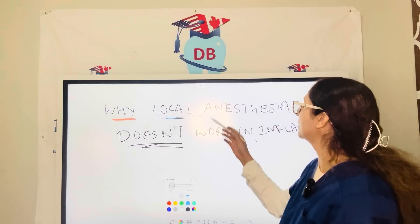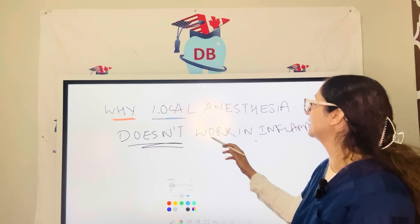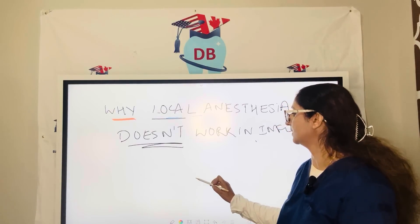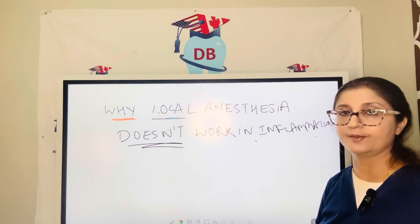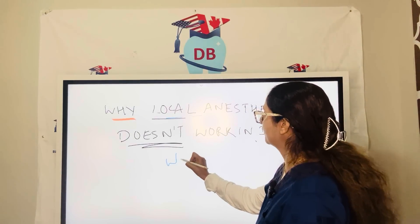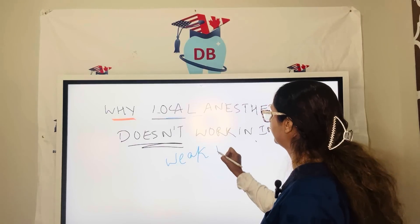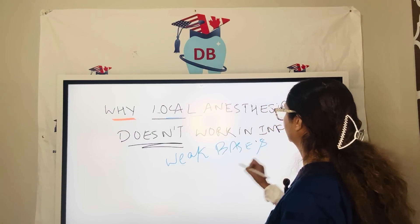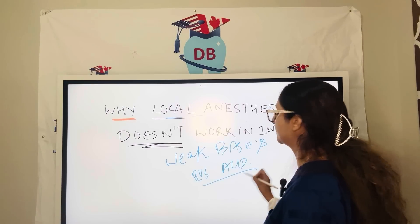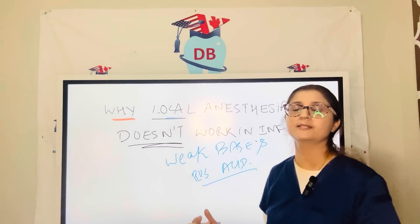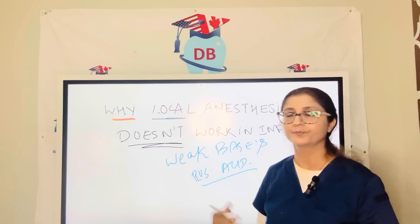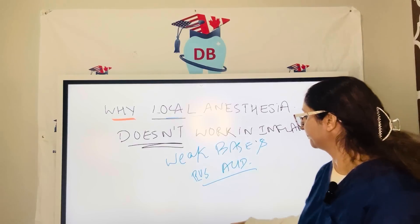The topic is why local anesthesia doesn't work in inflammation. First, we should know that local anesthetics are salts — they are made up of a weak base plus an acid. For example, if you see a carpule of lidocaine, you will see it says lidocaine hydrochloride 2%, lidocaine with 1:200,000 epinephrine.